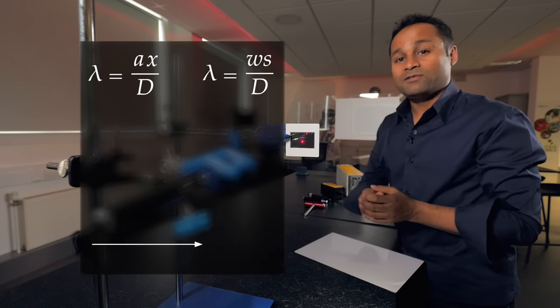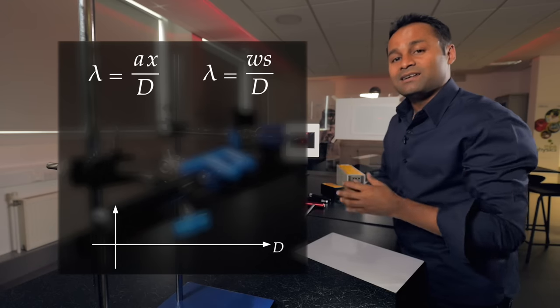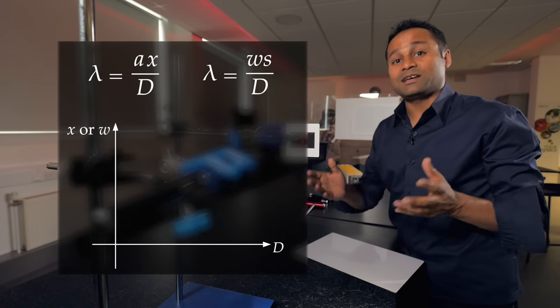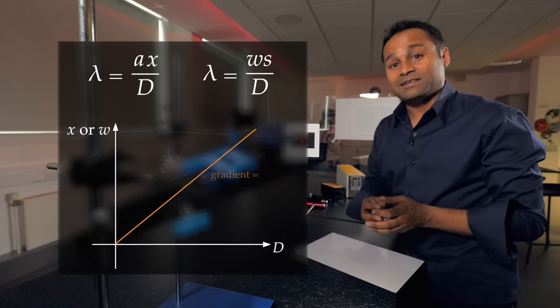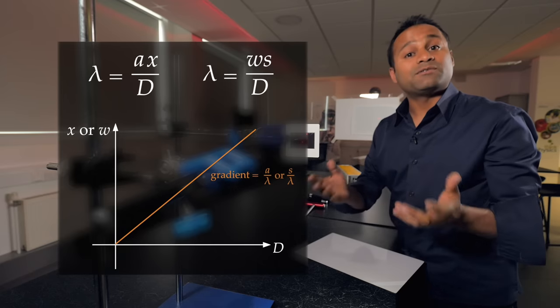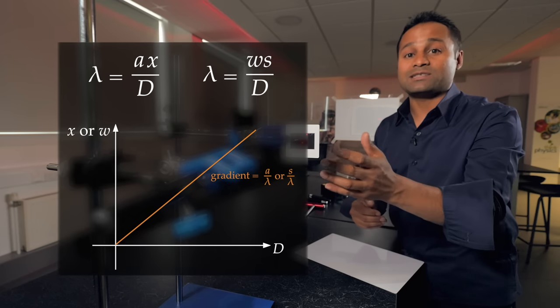If you plot a graph of the distance to the screen against the fringe separation, you should get a straight line which has a gradient equal to the slit spacing divided by the wavelength. If you know the slit spacing, you can calculate the wavelength.